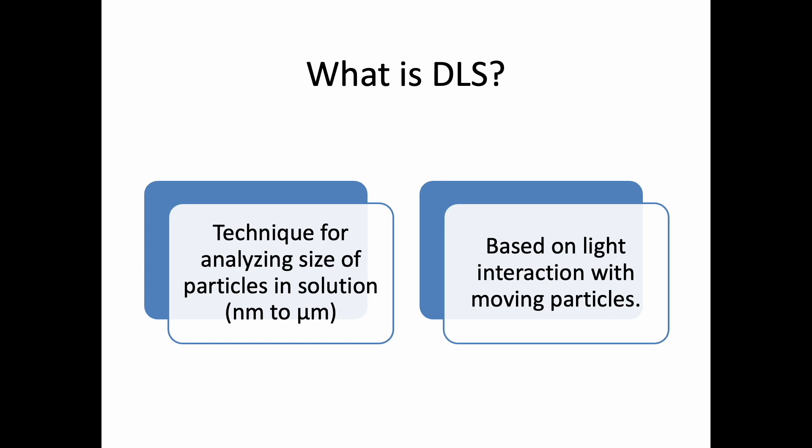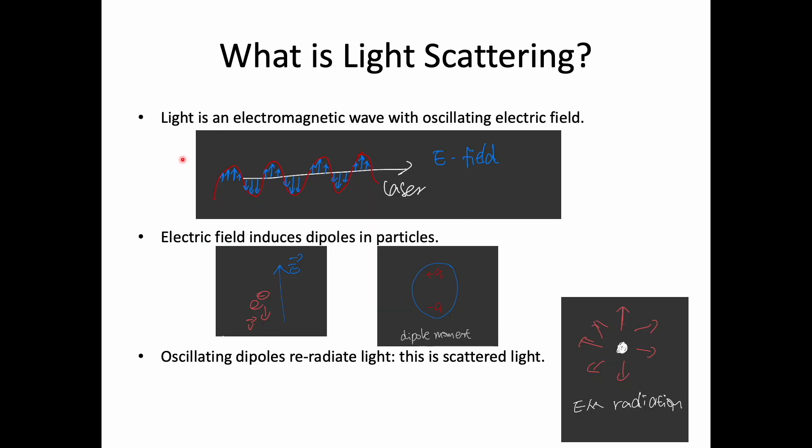The principle of DLS has something to do with how light interacts with particles that are moving. Let's explore how light, motion, and a bit of math come together to reveal the size of the particles. First, let's understand the phenomenon of light scattering.